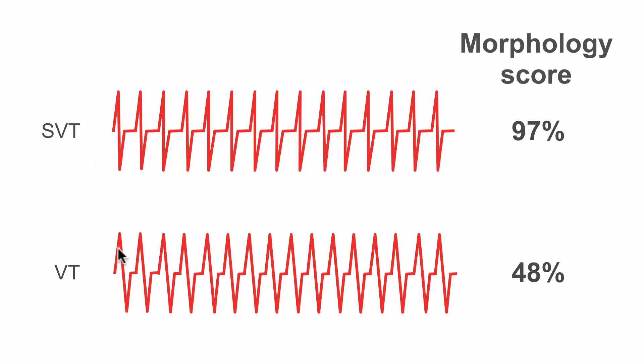If we take an SVT and a VT together in a single chamber defibrillator, we can see that actually the stability is the same, the heart rate is the same, and the onset could also be the same. They might have both started very abruptly. Now, the morphology discriminator at that point is the only discriminator available that is able to discriminate between a VT and an SVT, because it recognizes that the QRS is slightly different and actually only has a 48% match score in this example, so therapy would be delivered.